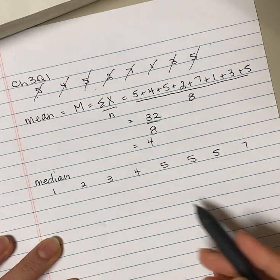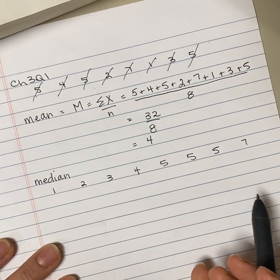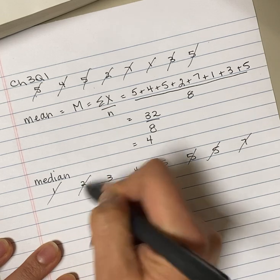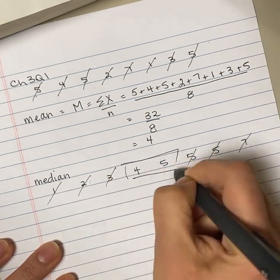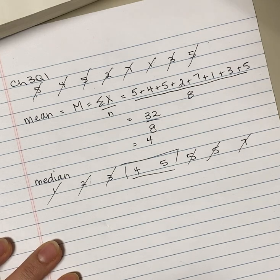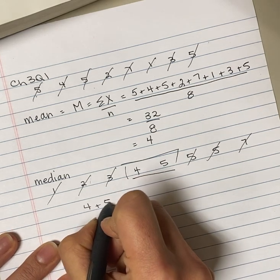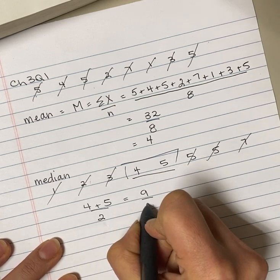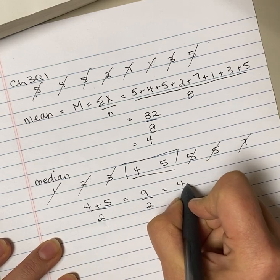Then what I do is I find the middle, in this case the middle scores, because it's an even number. So 1, 2, 3, 1, 2, 3. The middle two scores are these two values, 4 and 5. And what I'm going to do is add those two together and divide by 2. So that's 9 divided by 2, which is 4.5.